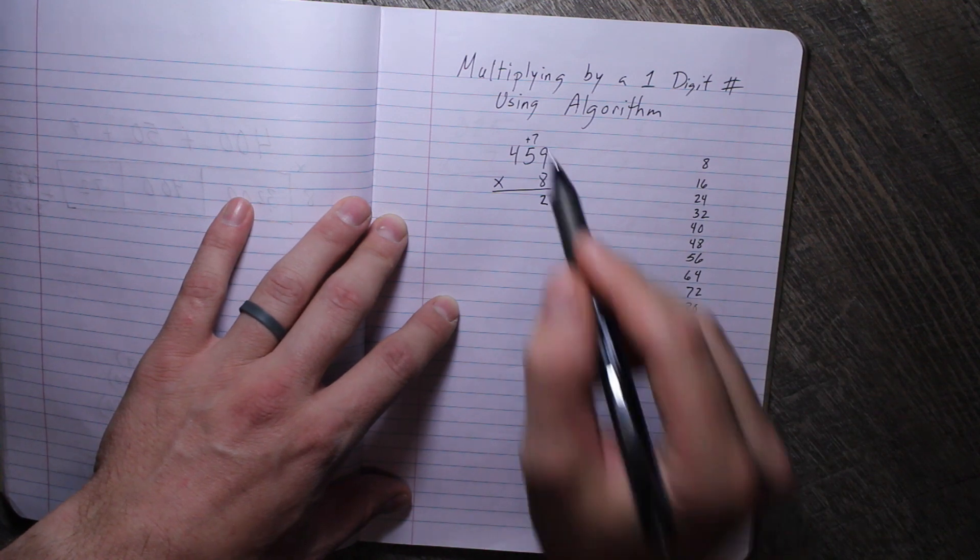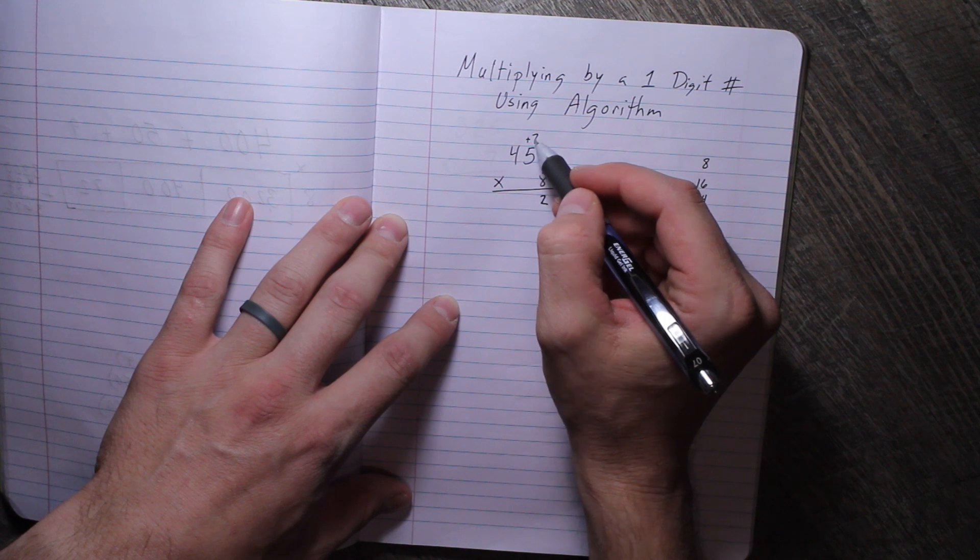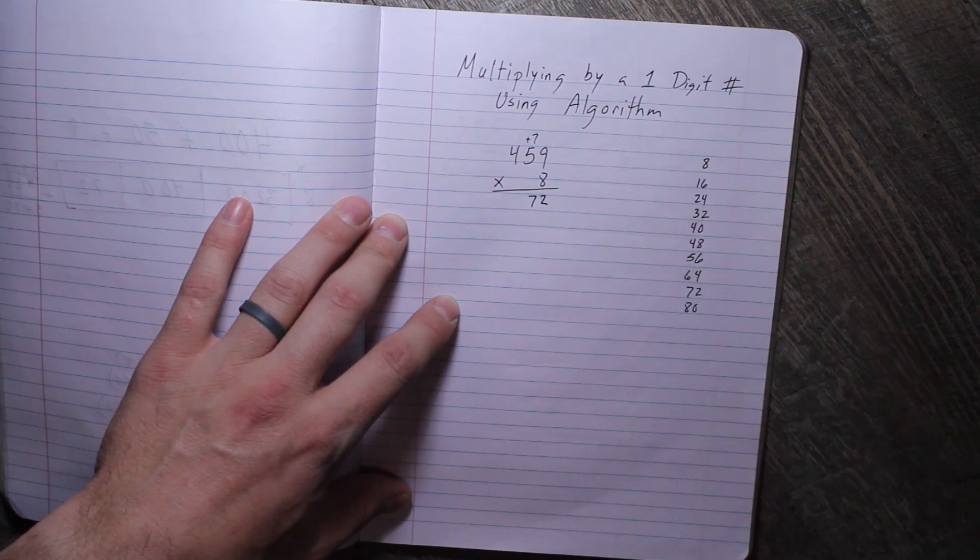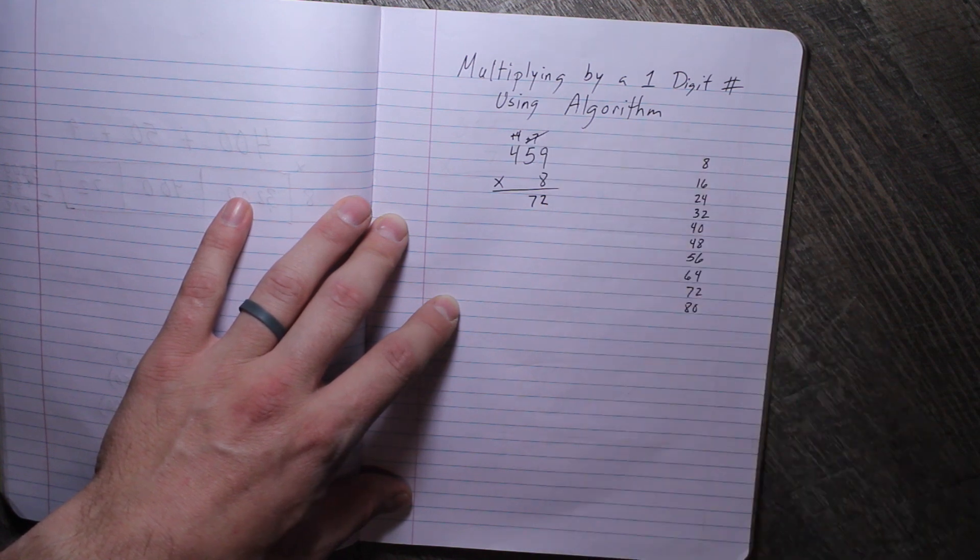Now we're multiplying the value, so this answer is going to go into the tens place. 8 times 5 is 40, but wait, we still have to add that 7. So 40 plus 7 is 47. So I'm going to put the 7 here, but wait, what do I do with the 4? I'm going to put it above the other 4.